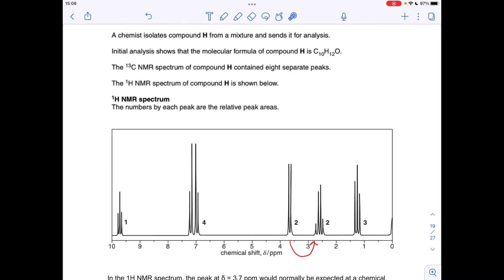Okay, so we'll make a start. We've got the molecular formula of compound H. We're told the carbon-13 NMR spectrum contained eight separate peaks, so that's obviously the number of different carbon environments in the molecule. I'm going to come back to that at the very end once I've got a good idea of what the structure is.